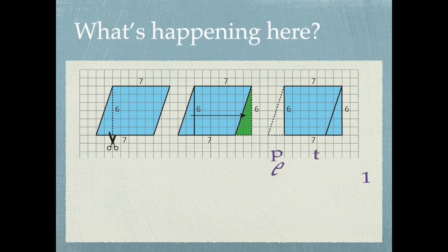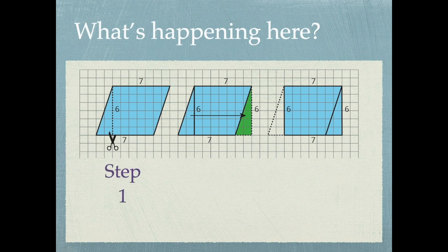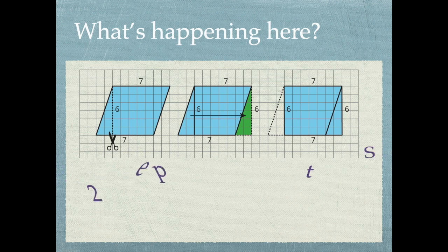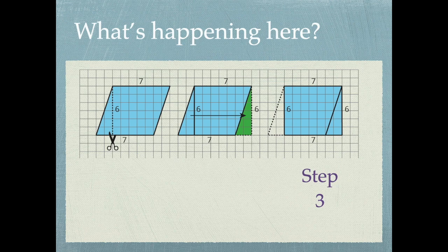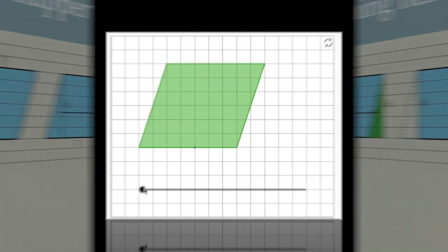Usually what people do then, the second step, when they realize they can't count the boxes, is they decompose the shape into something that's easier to count. The first step they did was they cut off that extra triangle. And then they moved that extra triangle to the other side. And when they did that, you could see that it made a perfect rectangle. And when it made a perfect rectangle, I could just do seven times six is 42. The area is 42.